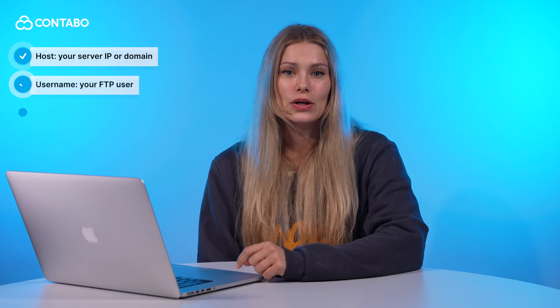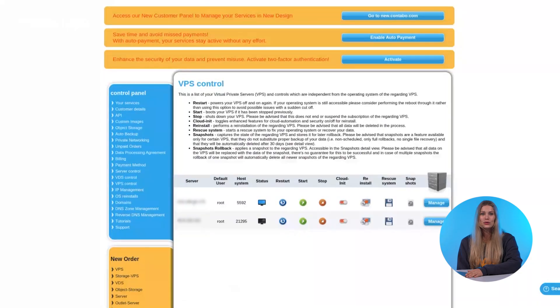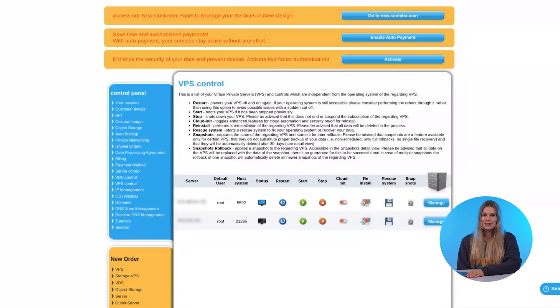Before you connect, you'll need these four things: your server IP or domain, your FTP username and password, and the port. You'll usually find these in your hosting panel. If you're using a Contabo VPS, just log into your control panel or set up users via your server settings. Quick tip: use SFTP instead of plain FTP whenever possible — it's more secure.